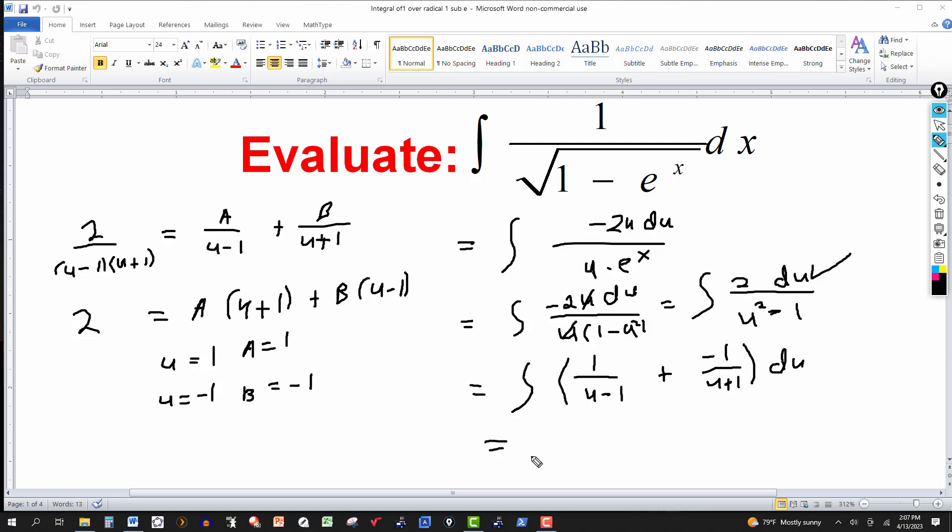This is just going to be equal to natural log. You can use another substitution here, but you shouldn't have to. You should see that the natural integral of 1 over u minus 1 is the natural log of u minus 1. The same way, the natural log of minus 1 over u plus 1 is minus natural log of absolute u plus 1 plus the constant of integration. And that's just that's it as far as the integration goes. The only thing we have to do now is just go back to the original variable. We know that u is the square root of 1 minus e to the x.